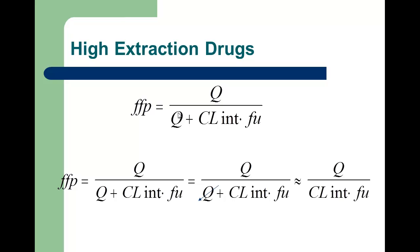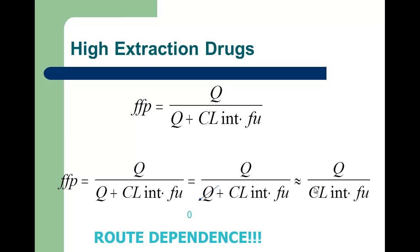The big profound effect is in high extraction drugs given orally because it affects both bioavailability and clearance. Looking at the equation for the fraction that escapes first pass effect: for high extraction drugs, Q is the rate limiting step so Q falls out of the denominator, and the fraction that escapes first pass is determined by Q over intrinsic clearance times fraction unbound. When intrinsic clearance decreases, we see an increase in the fraction escaping first pass effect, and we see route dependence because of this first pass effect issue.